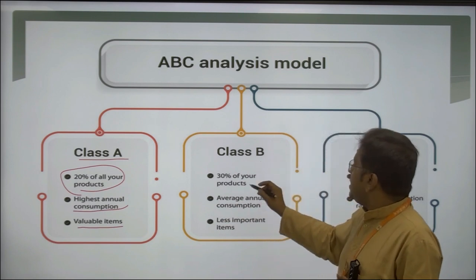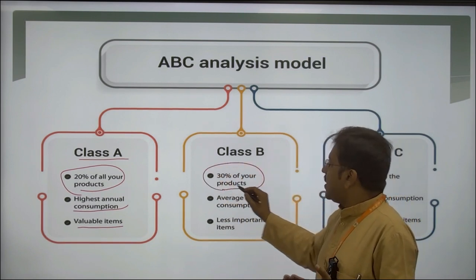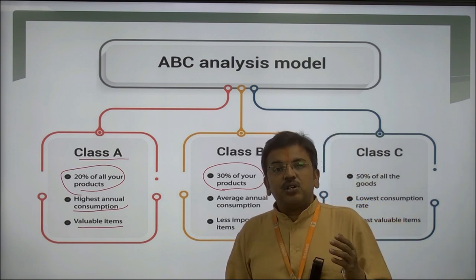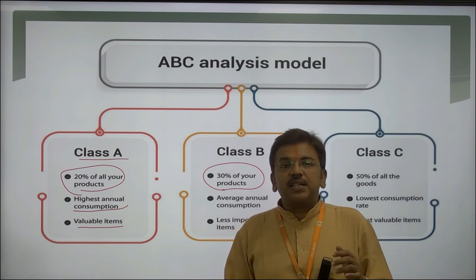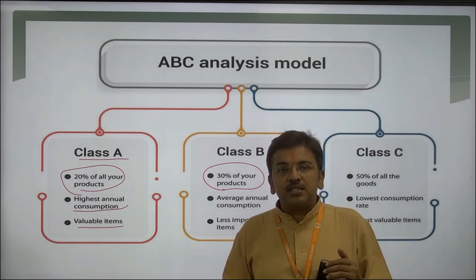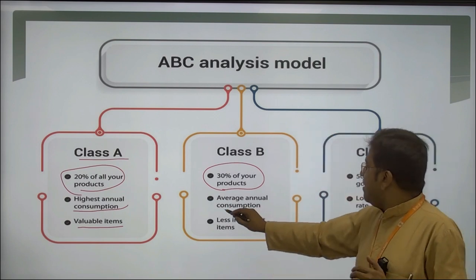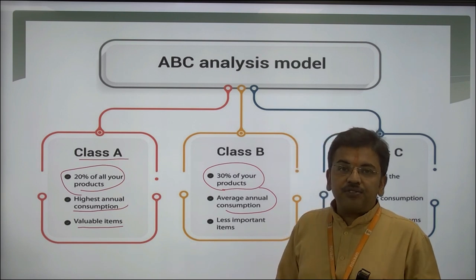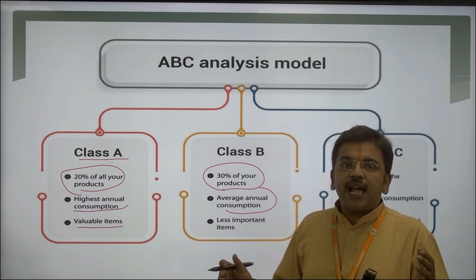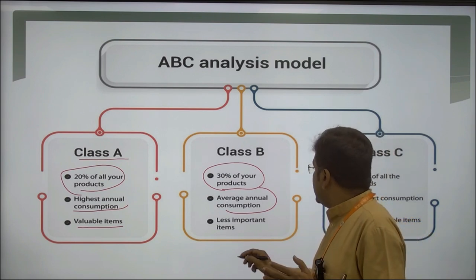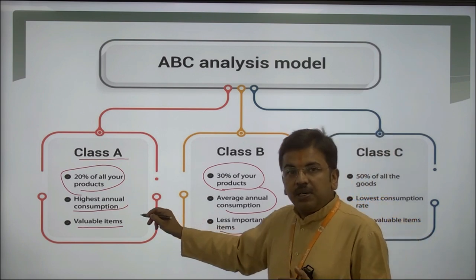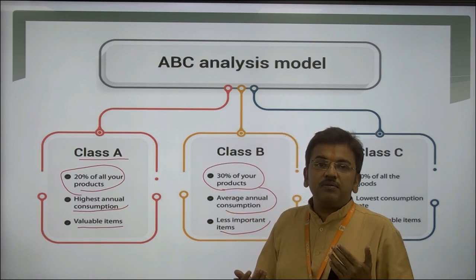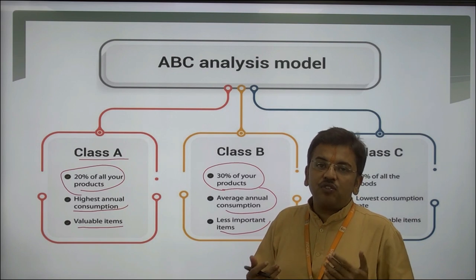For Class B, 30% of your products are taken here. An example is bricks — bricks can be kept on the roadside or in an open space. They have average annual consumption, meaning we can buy bricks in larger quantities as required. Bricks are a less important item compared to cement because the chances of wastage of cement are greater than the chances of wastage of bricks.